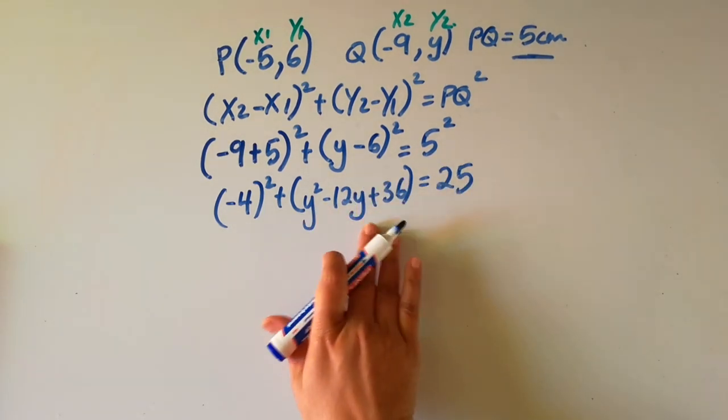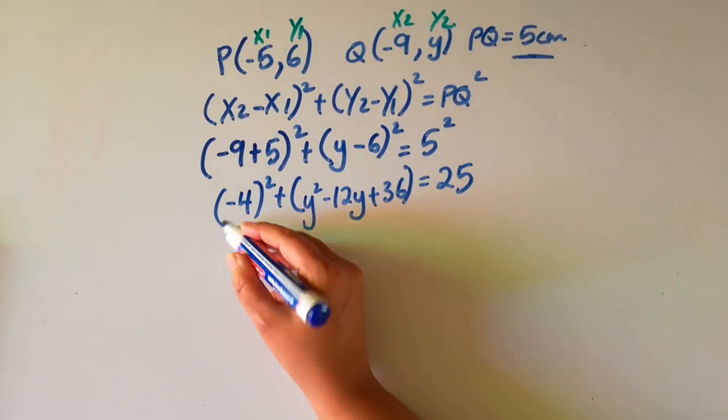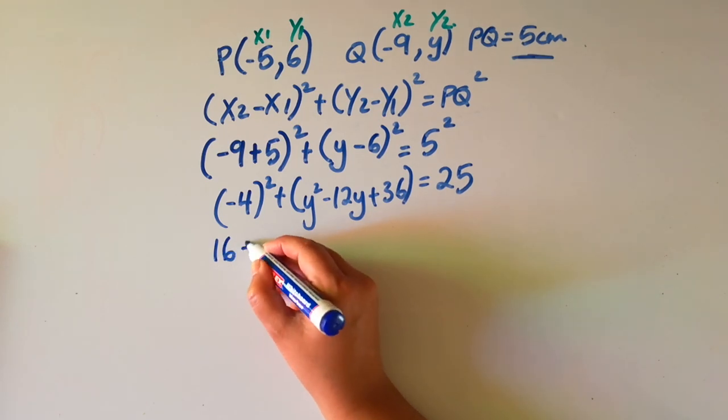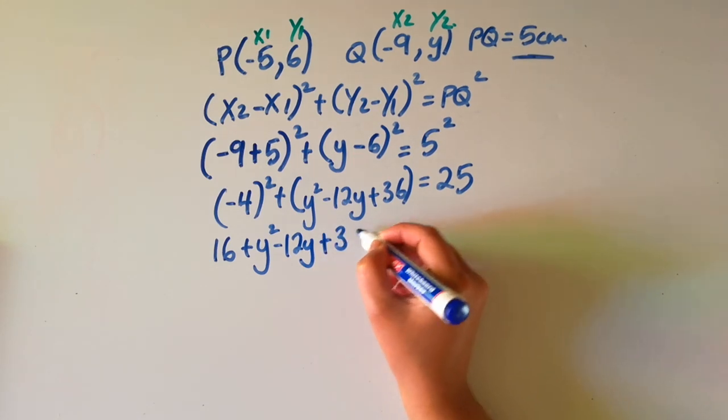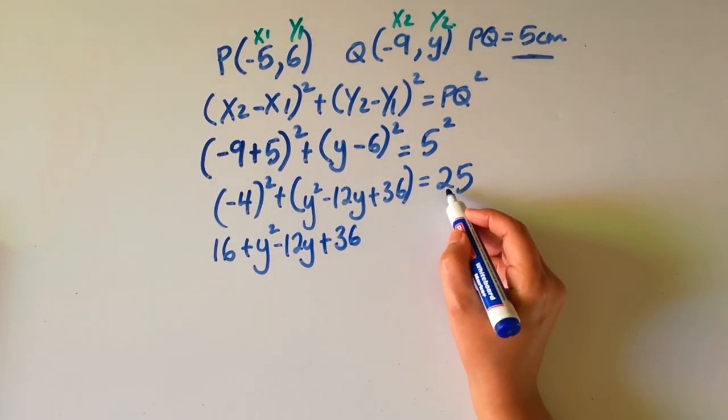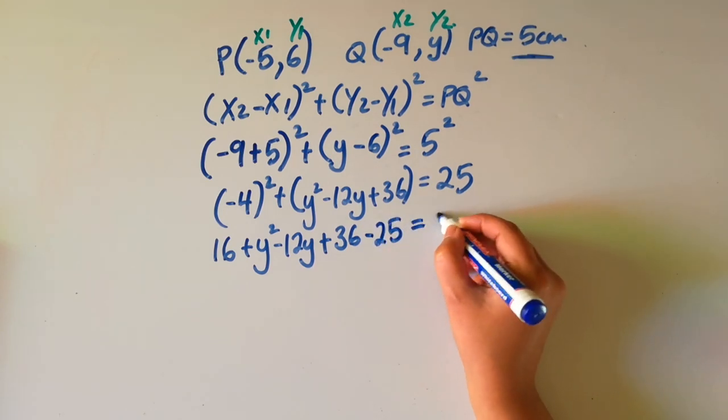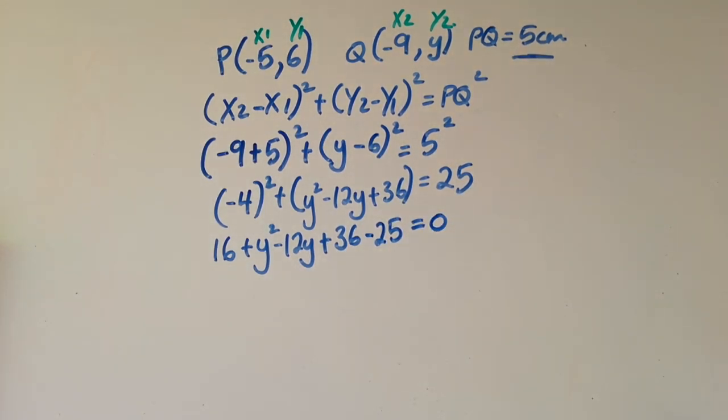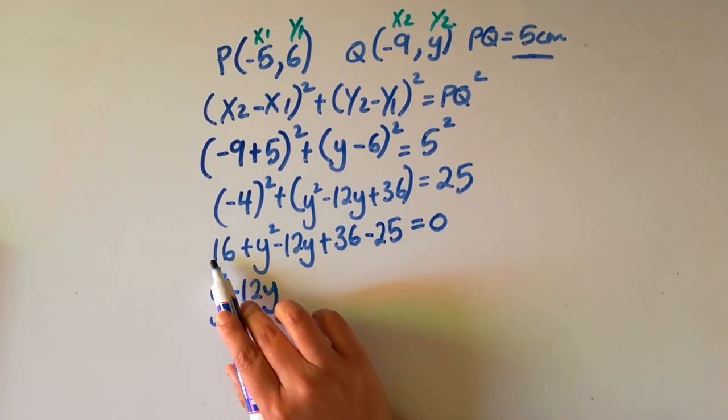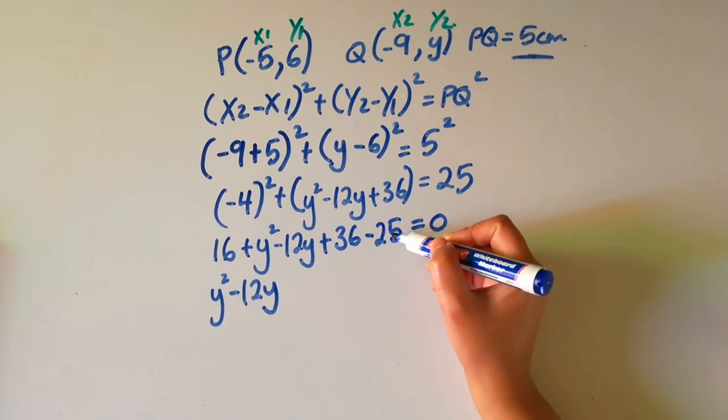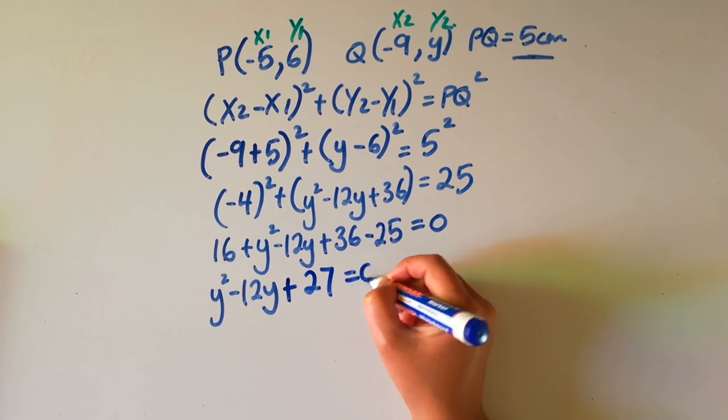I'm going to now take out these brackets and I'm going to move this 25 onto this side. So we get minus 4 squared is 16, plus y squared minus 12y plus 36, and I'm going to move this 25. Positive 25 will now become negative 25, is equal to 0. Y squared minus 12y, we've got 16 plus 36 minus 25 will give us plus 27, is equal to 0.